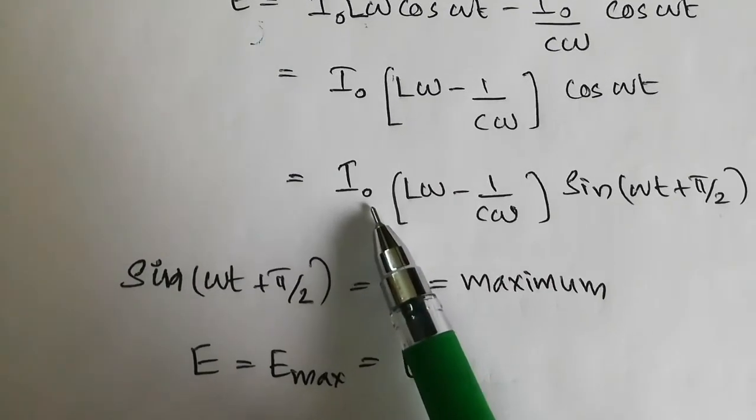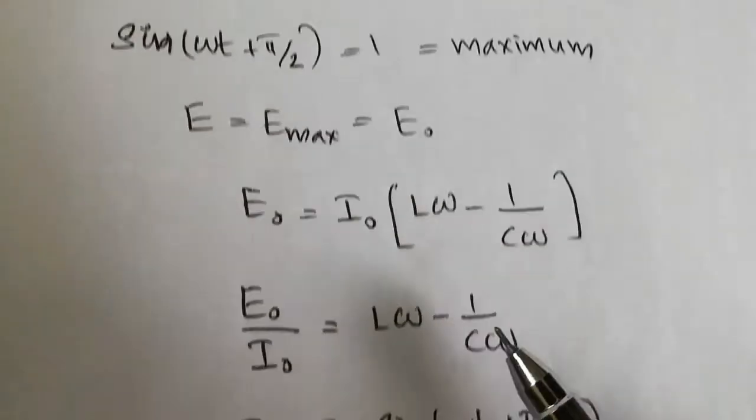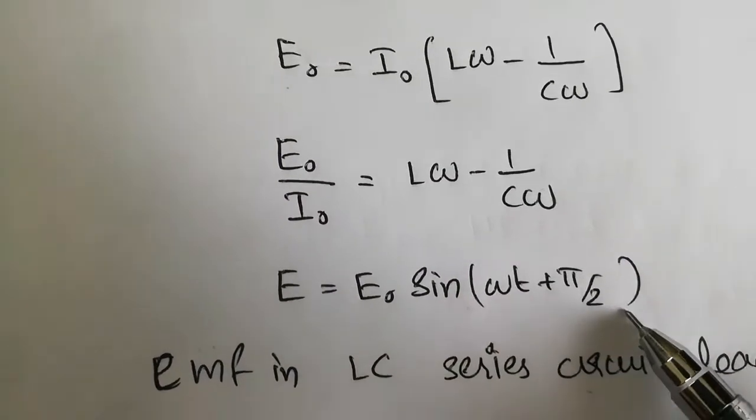Substituting the value of E0 equals I0 times L omega minus 1 by C omega, we can rewrite this as E equals E0 sin omega t plus pi by 2.